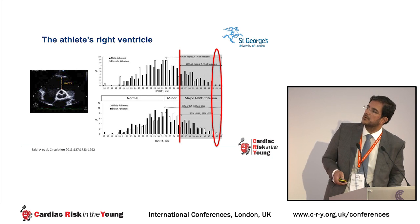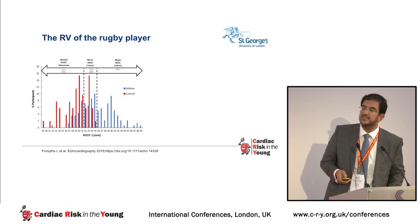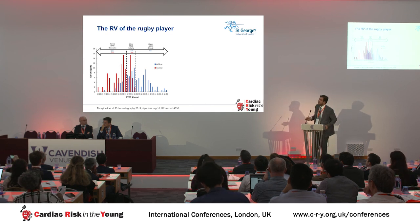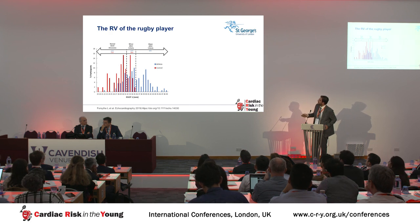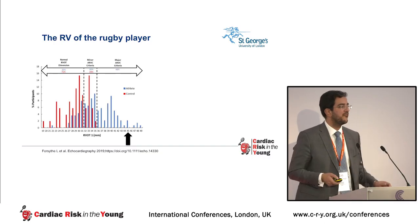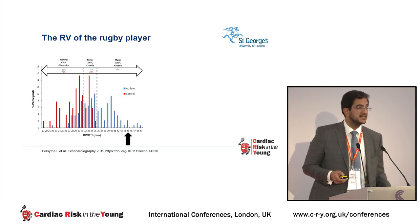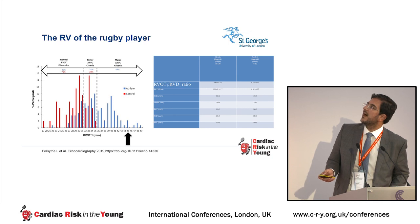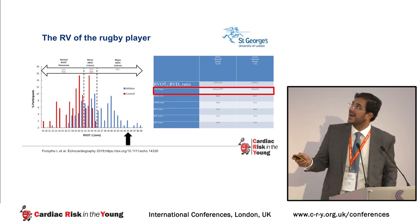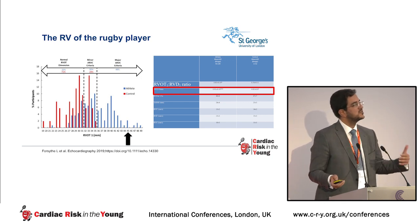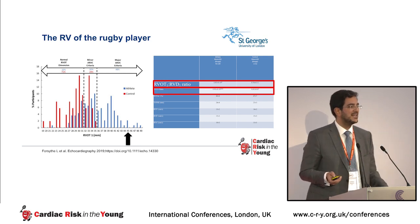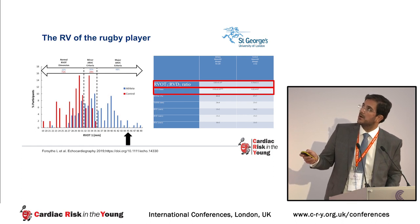A study by Lissing Forsythe, working with David Oxborough from Liverpool and funded by Cardiac Risk in the Young, looked at about 150 rugby players. The message was exactly the same — almost 40% overlap with major diagnostic criteria dimension-wise. Our athlete again falls at the fringes of what's considered normal for a large rugby player. The RV-to-LV ratio was 0.9, showing a slight preferential dilatation of the RV, and the outflow-to-inflow ratio was similarly about 0.8 to 0.9.